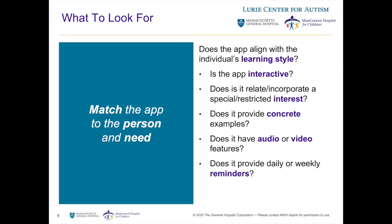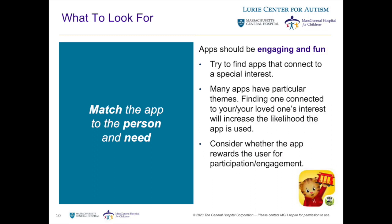You should also consider whether the app aligns with your loved one's learning style. Is it interactive — does it have games, videos, or audio? Does it have a specific theme that may match a special or restricted interest? Does it provide concrete examples or activities? And does it provide reminders? Many apps have push notifications that can help in reminding your loved one to engage with the app or practice a specific skill. Finally, consider whether the app is engaging and fun. Motivation to use an app is tied to how much they actually like it. Finding an app connected to a special interest or one that involves games and rewards can really increase motivation to use the app.